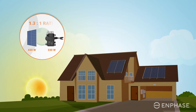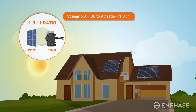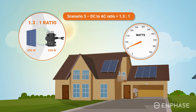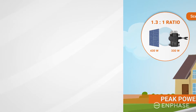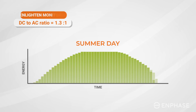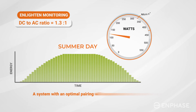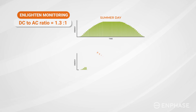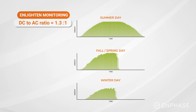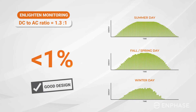Finally, we have an optimal pairing for the climate and other site characteristics like panel orientation and tilt. The DC to AC ratio is 1.3 to 1, and during the sunniest time of the year, the inverter periodically reaches its peak power and maximum potential. These periods of inverter saturation are represented in the Enphase app as a flat portion of the bell curve of a day's energy production. A system with an optimal pairing will experience periods of saturation during high production months, typically early summer, while the rest of the year the peak power of the microinverter is not usually reached and there is little or no uncaptured energy. Computer modeling of this pairing tells us that less than 1% of potential energy production is not captured on an annual basis.